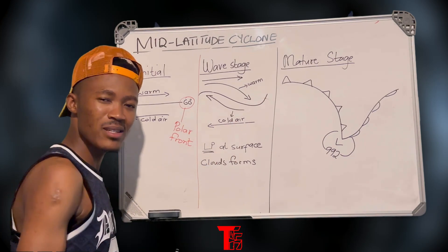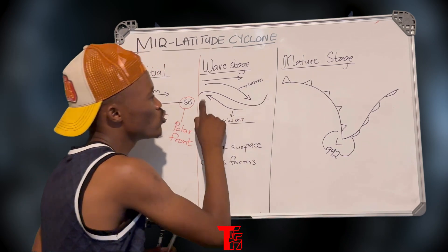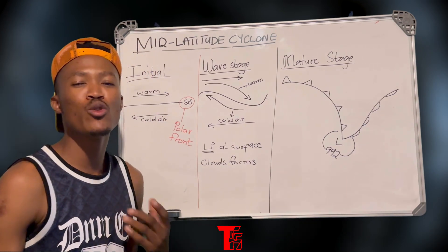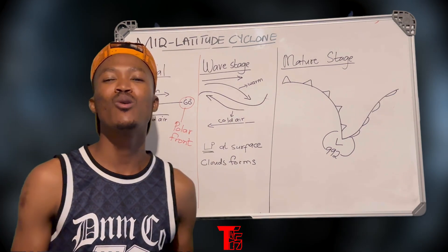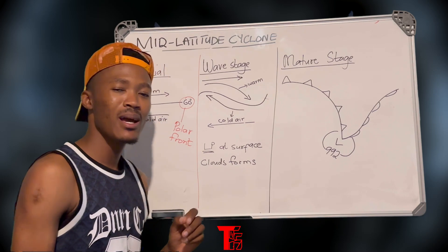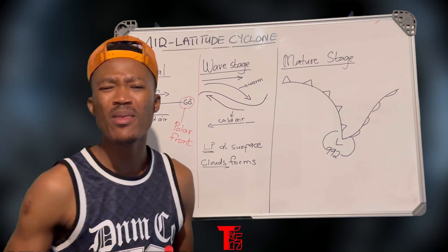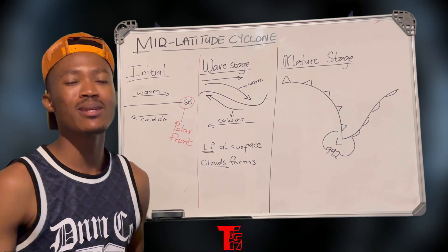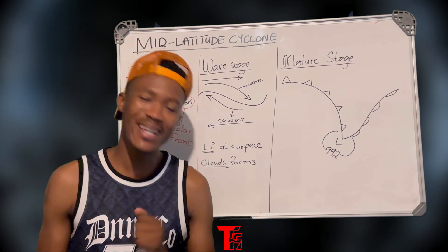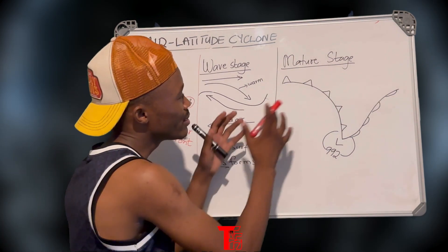Note that the cold air moves faster than the warm air. When this happens, it creates a shape that looks like a wave — we refer to this as the wave stage. At this time, warm air rises above the cold air, and at the surface we start to have a low pressure cell forming. At this stage we can start to see clouds steadily forming, and as the low pressure cell continues to intensify, the system progresses into the mature stage.